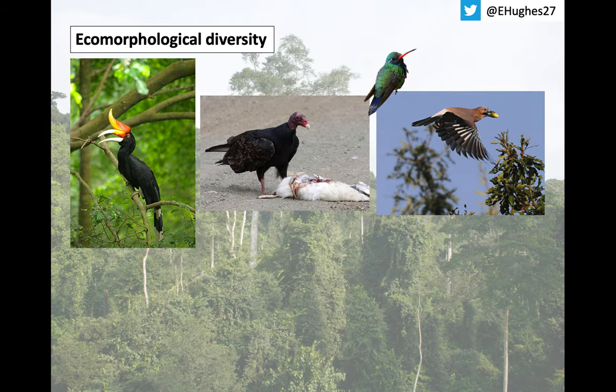As we're all aware, we're in the midst of an extinction crisis. We know that certain types of species, such as large frugivores, are more at risk of extinction than others. But are we generally losing key functions, roles, and morphologies at a greater rate than expected across the tree of life and across space? The loss of such ecomorphological diversity would lead to a homogenisation of species ecomorphology, having potential knock-on effects for ecosystem functioning.